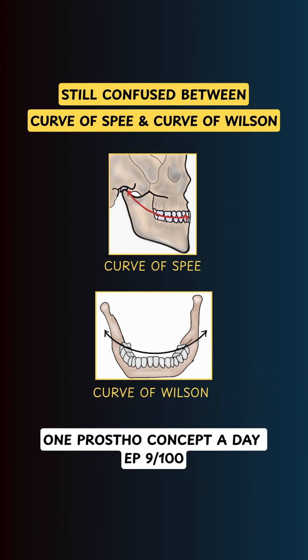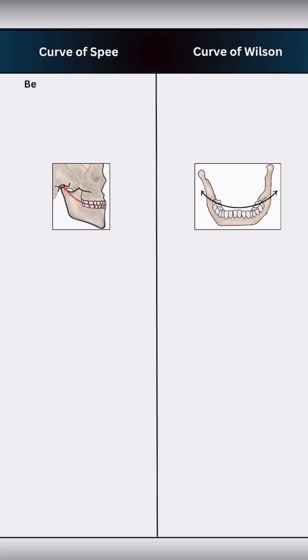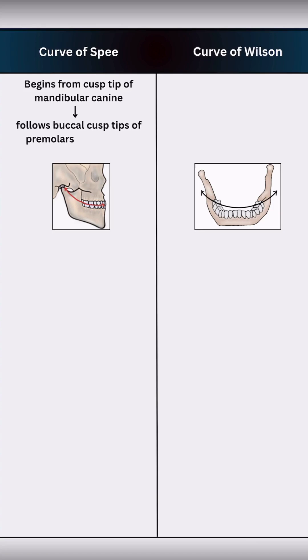Still confused between the curve of Spee and the curve of Wilson? Let's fix that in under 90 seconds. The curve of Spee runs from the tip of the mandibular canine along the buccal cusps of premolars and molars, curving upwards towards the ramus and terminating near the condyle.